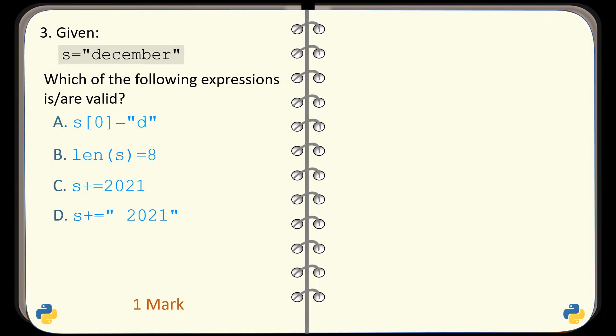Question number 3. For the given string S, identify which of the given expressions is valid. The answer is given in option D. Option A is invalid because strings are immutable. B is invalid because we cannot assign any value to a function call. C is invalid because we cannot concatenate an integer to a string.